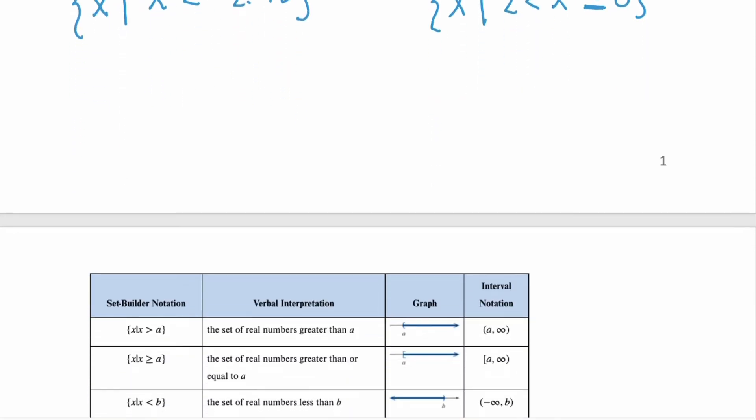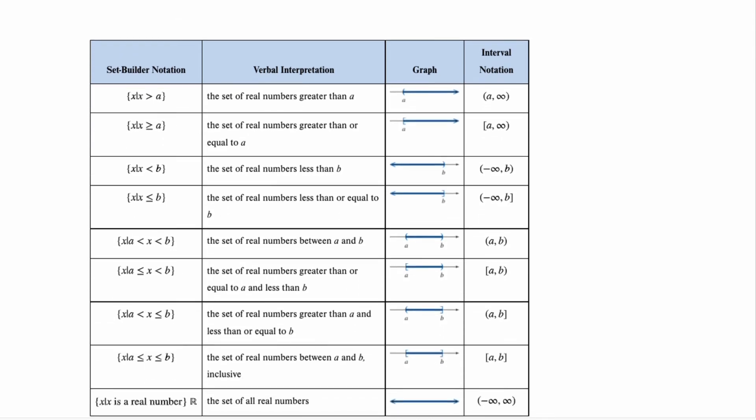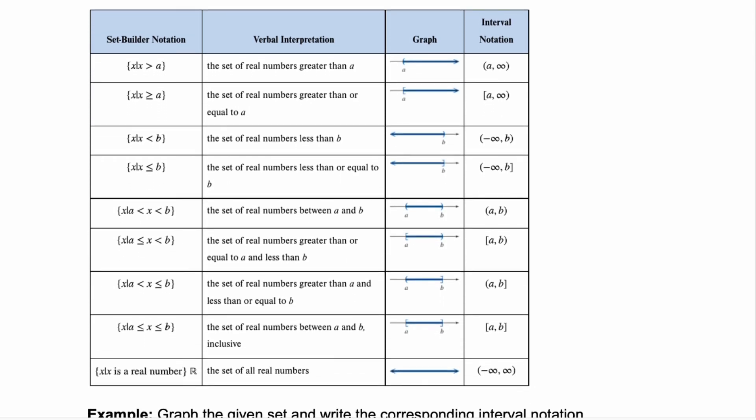The top half of this next page gives you a quick refresher of the possibilities. The first column you have the set-builder notation. The next you have that verbal interpretation, so what you would see in writing. The third column is how it looks graphically, and notice the difference between parentheses and brackets throughout. And then the very last column shows you how that situation looks in interval notation.